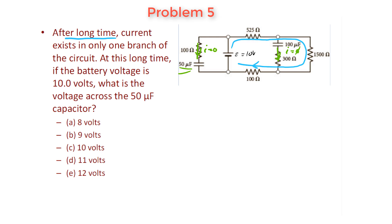With that being said, all we have to do to solve this problem is simply do a loop. We're going to start over here and do a loop that includes this capacitor. Why do I want to include that capacitor? Because they're asking me for the voltage across that capacitor, so I should do a loop rule that includes it.